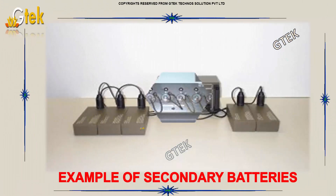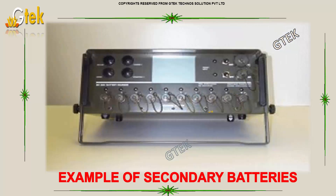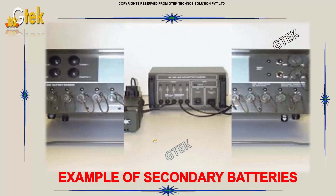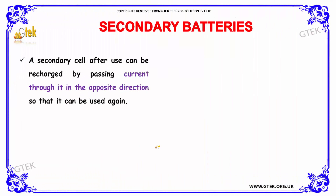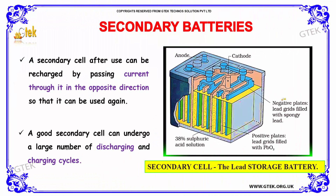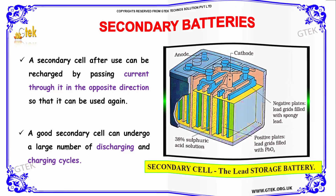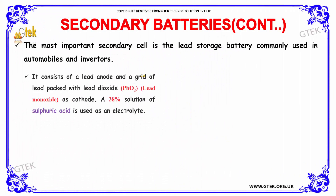This is how secondary batteries work. You can see some examples of secondary batteries here. A secondary cell, after use, can be recharged by passing current through it in the opposite direction so that it can be used again. A good secondary cell can undergo a large number of discharging and charging cycles.